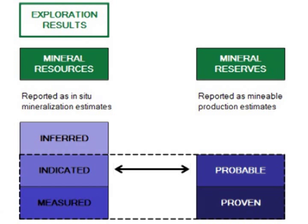Indicated resources are converted to probable reserves. Probable reserves have a lower level of confidence than proven reserves, but have a reasonable level of confidence in continuity of mineral and consistency of grade. In most cases, measured mineral resources are converted to proven reserves. Proven reserves have a high level of confidence in continuity of mineral and consistency of grade, as well as a high level of confidence in the modifying factors. Sometimes measured resources are converted only to probable reserves instead of proven reserves. This reflects not a lower level of confidence in the geological results, but rather a lower level of confidence in one or more of the modifying factors.